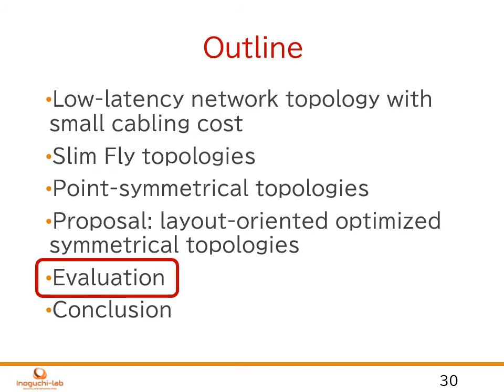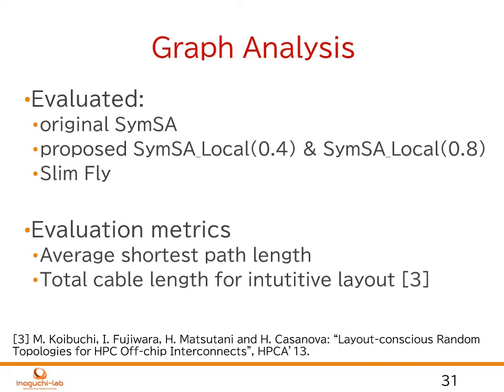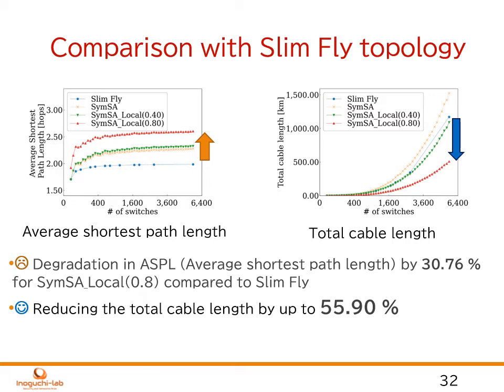Next, we move to the evaluation and comparison. In the graph analysis evaluation, we evaluate the original and proposed symmetrical topologies and compare them with the conventional slim-fly topologies. We measure the average shortest path length and total cable lengths, assuming an intuitive layout method. In the left-side figure, we show the average shortest path length varying the number of switches. The slim-fly has the best performance due to its smallest diameter of 2, while the original and proposed symmetrical topologies show some degradation. Notably, the original and proposed SimSAs can be generated for arbitrary network sizes, which cannot be achieved by slim-fly.